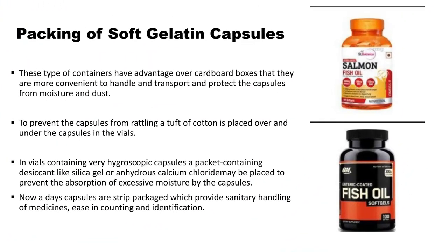When we talk about the packaging of soft gelatin capsules, plastic and glass containers have advantages over cardboard boxes since they are more convenient to handle, transport, and protect the capsules from moisture and dust. To prevent the capsules from rattling — that is striking against each other — a tuft of cotton is placed over and under the capsules in the vials. In vials containing very hygroscopic substances, desiccants like silica gel or anhydrous calcium chloride may be placed to prevent absorption of excess moisture.